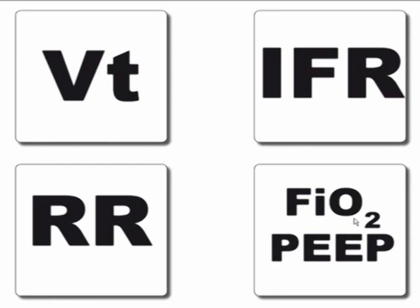Summary of all the dials: tidal volume equals lung protection — if plateau pressure is too high, drop the tidal volume. Inspiratory flow rate equals patient comfort — if the patient looks like they're sucking and not getting enough air, increase the inspiratory flow rate. Respiratory rate equals ventilation — CO2 too high, go up on respiratory rate; CO2 too low, go down. FiO2 and PEEP together equal oxygenation — sat less than 90%, go up in tandem using the PEEP scale; sat greater than 95%, go down in tandem using the PEEP scale.